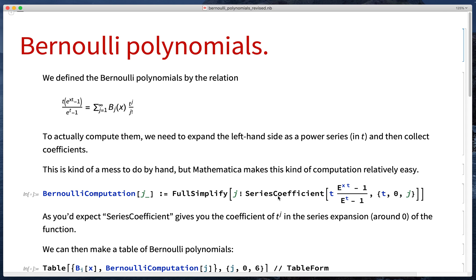We can get a coefficient out of a power series with this handy SeriesCoefficient function. The SeriesCoefficient of function, variable, point to expand around, power gives you the coefficient of t to the j in the power series for this function expanded around 0. So the Bernoulli polynomial should be j factorial times the coefficient of t to the j.